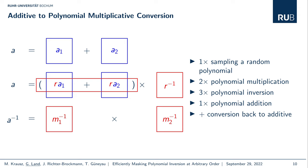We also need to convert back to the additive domain since most other operations are not efficient in the polynomial multiplicative domain. Looking at the two shares, we sampled R, inverted it to get M2, and then invert it back. We can therefore omit these two polynomial inversions, leaving only one polynomial inversion for the combined conversion and inversion step. The only remaining piece is the conversion back to the additive domain.